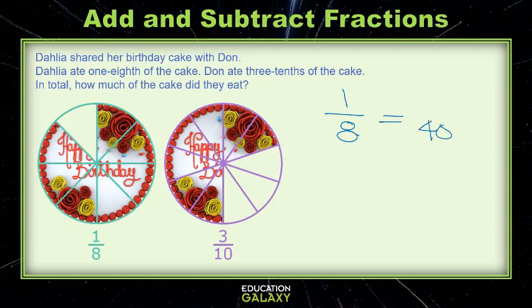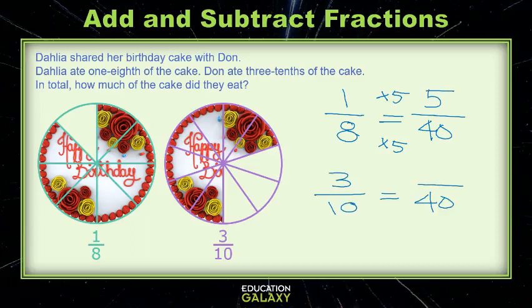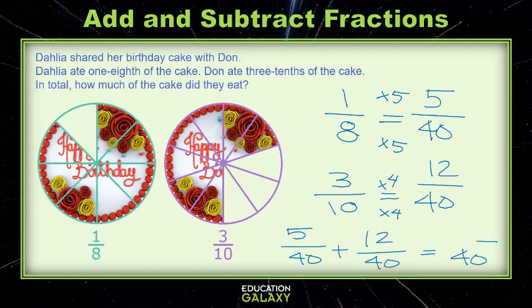Forty will work. So I can multiply eight by five to get forty. What I do to the bottom I must do to the top and I see that I have five. Now with three tenths, how am I going to get a forty in the denominator? I'll multiply that ten by four, multiply three by four, and now I have twelve forties. So now to find my grand total, I add my five forties and my twelve forties by leaving the denominators alone and just adding the numerators. And just like that, you know how to create common denominators to add fractions.